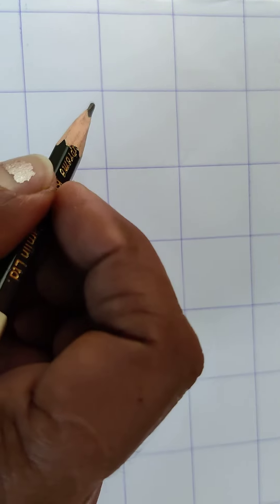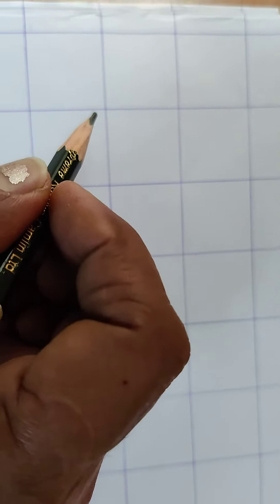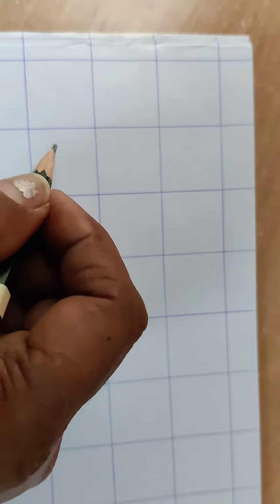First you have to draw slanting lines like you have learned in the first design. We will make a kite with the help of slanting lines. Okay children.